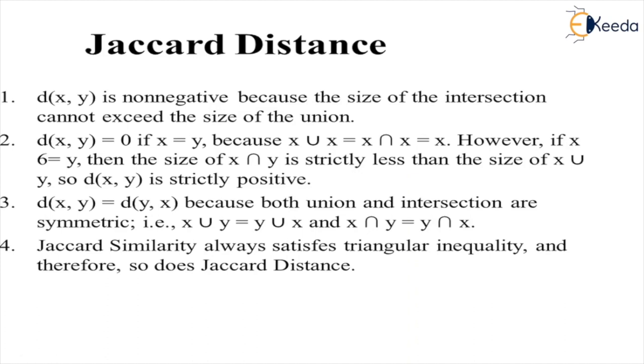Distance x and y and y and x both are same because union and intersection are symmetric. That is, x union y equals y union x, and x intersection y equals y intersection x, giving the same result.